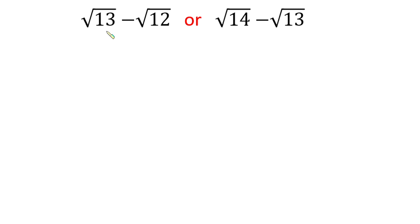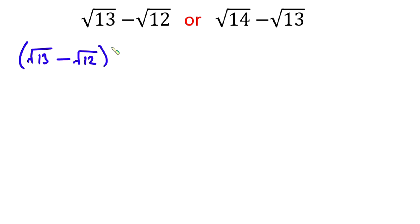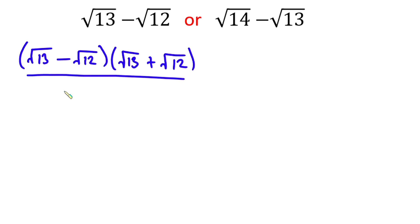Starting from this one, we have root 13 minus root 12, times its conjugate which is root 13 plus root 12, divided by root 13 plus root 12.